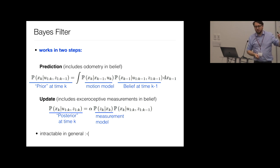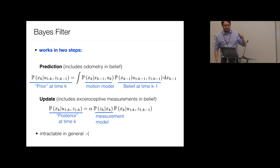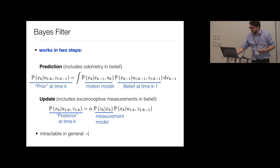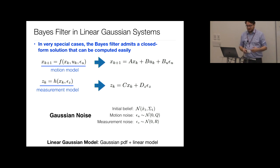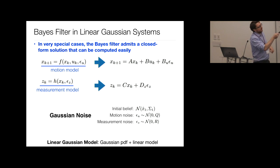The special case where the Bayes filter has a tractable closed-form solution is when the system is linear — both the motion model and measurement model must be linear functions, not generic nonlinear F and H — and the noise on measurements and motion is Gaussian. Under these two assumptions, the Bayes filter can be solved in closed form.